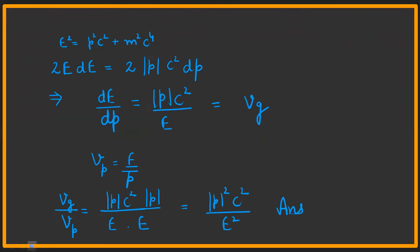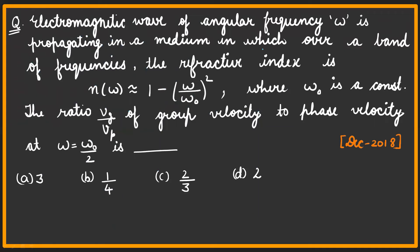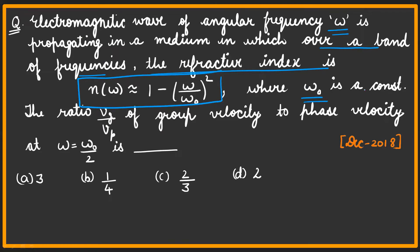Coming to the next question: an electromagnetic wave of angular frequency ω is propagating in a medium in which, over a band of frequencies, the refractive index is given by this relation, where ω₀ is a constant. We have to find the ratio vg/vp at ω = ω₀/2. We have a refractive index and a dispersion relation given.